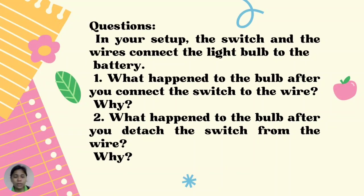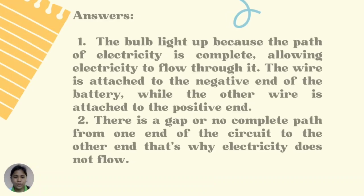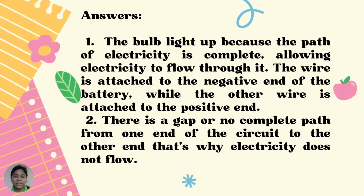Now let us answer some questions about the activity. In your setup, the switch and the wires connect the light bulb to the battery. Question 1: What happened to the bulb after you connect the switch to the wire? Why? Question 2: What happened to the bulb after you detached the switch from the wire? Why? For number 1: The bulb lit up because the path of electricity is complete, allowing electricity to flow through it. The wire is attached to the negative end of the battery while the other wire is attached to the positive end. For number 2: There is a gap or no complete path from one end of the circuit to the other end, that's why electricity does not flow.